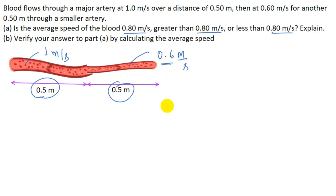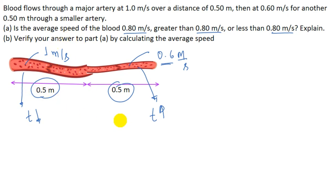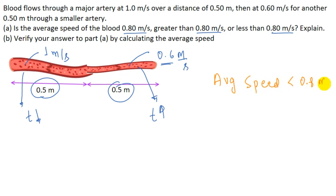The time intervals are different: in the smaller artery the blood flows at 0.6 meters per second, so it spends more time there. In the major artery the speed is greater and distance is the same, so time is less. Because more time is spent in the smaller artery, the average speed should be less than 0.8 meters per second.